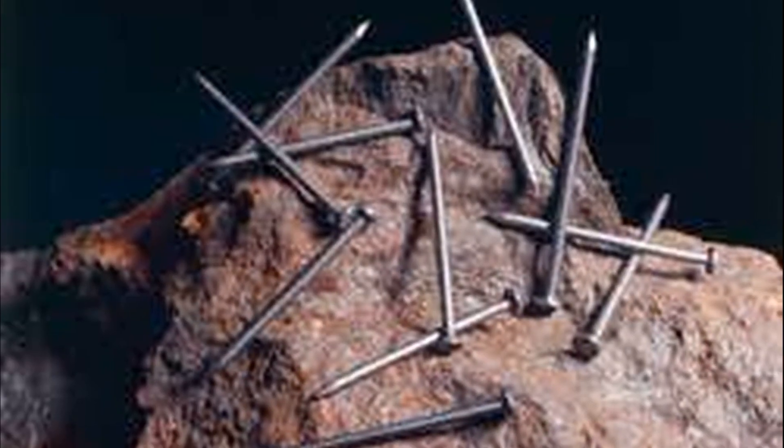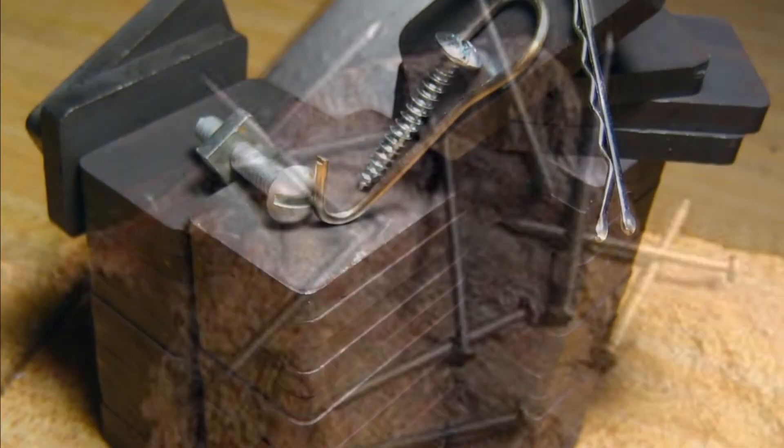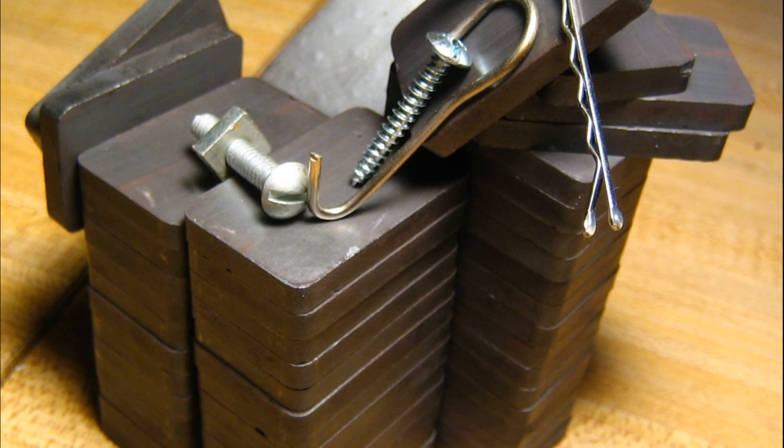However, if a piece of iron is rubbed with lodestone, the iron acquires the properties of the lodestone. i.e. the iron gets magnetized. This piece of iron is called an artificial magnet.